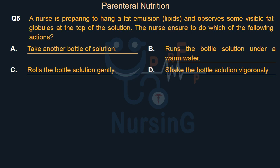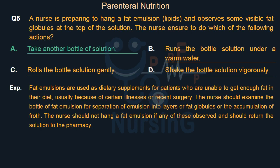Right answer is Option A: Take another bottle of solution. Fat emulsions are used as dietary supplements for patients who are unable to get enough fat in their diet, usually because of certain illnesses or recent surgery. The nurse should examine the bottle of fat emulsion for separation of emulsion into layers, fat globules, or accumulation of froth. The nurse should not hang a fat emulsion if any of these are observed and should return the solution to the pharmacy.